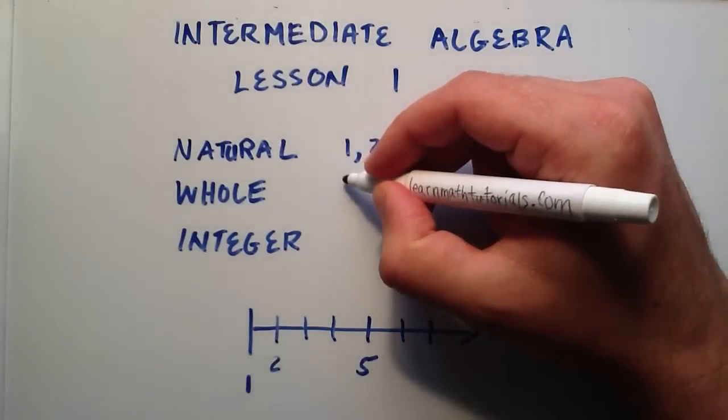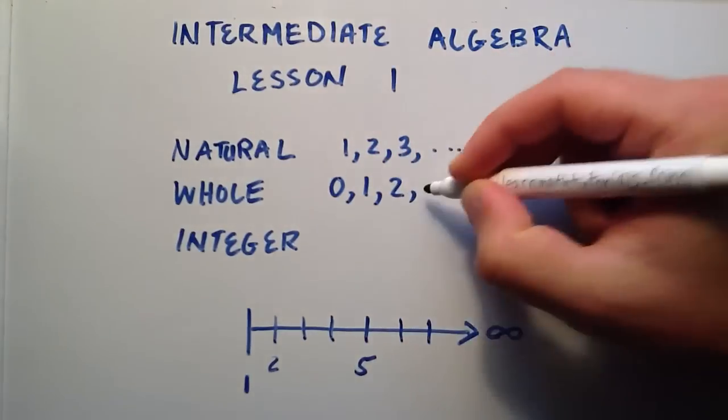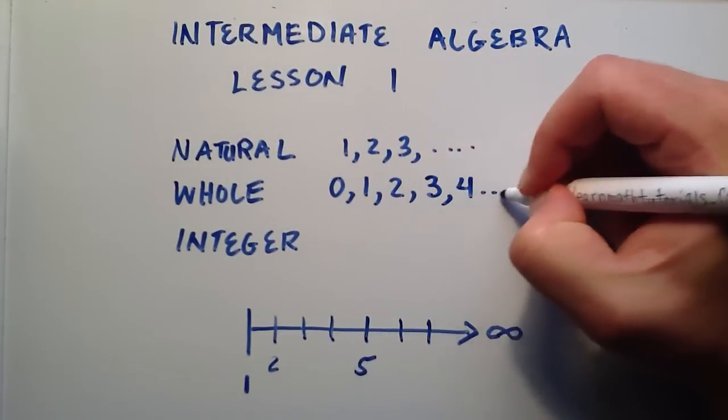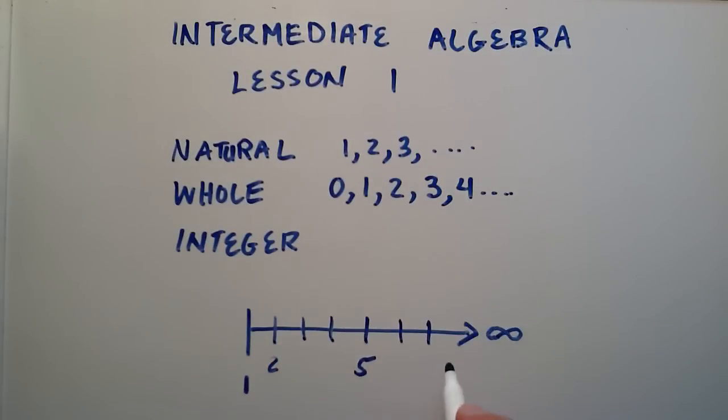Now the whole numbers are the same as the natural numbers except for they also include the addition of the number 0. So 0 doesn't fit on this number line.